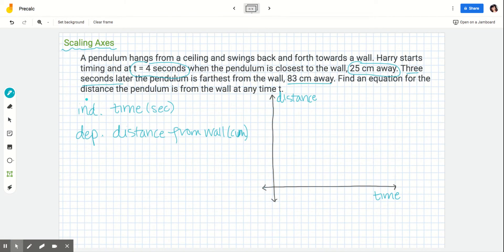Let's look at the information we've been given. We have 4 seconds is 25 centimeters away. Since x is time and y is distance, that's the coordinate (4, 25). Then the other coordinate is 3 seconds later—so 3 seconds after 4 is 7—at 83 centimeters away, giving us (7, 83).